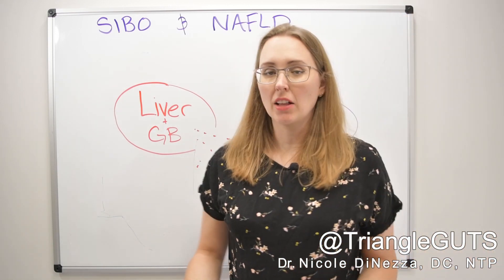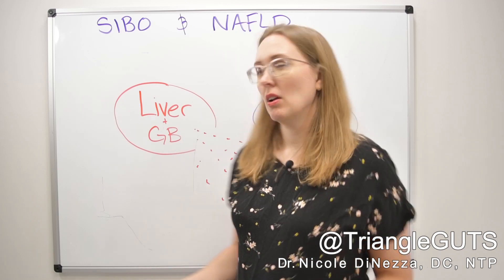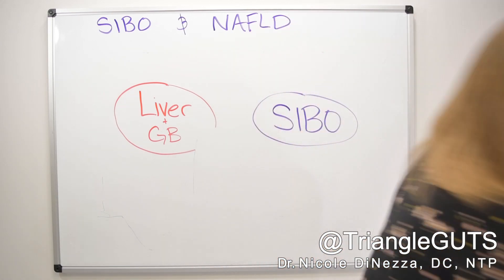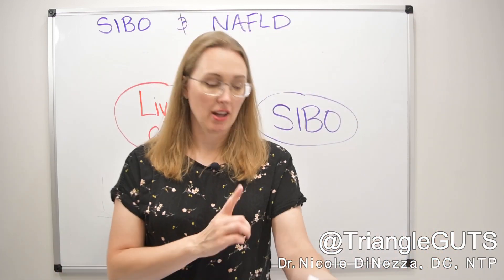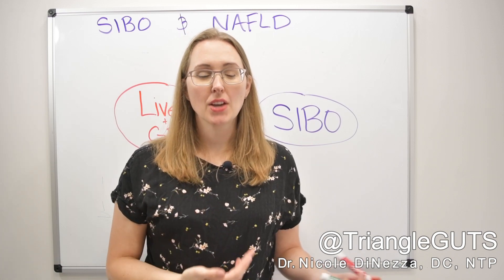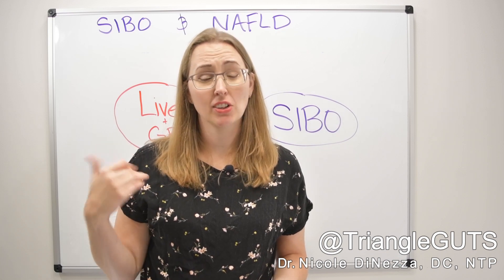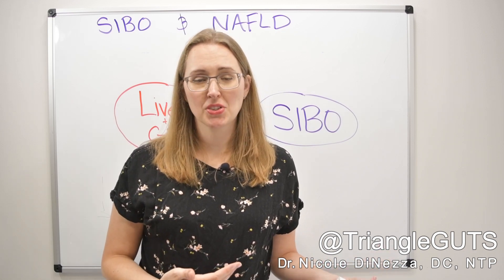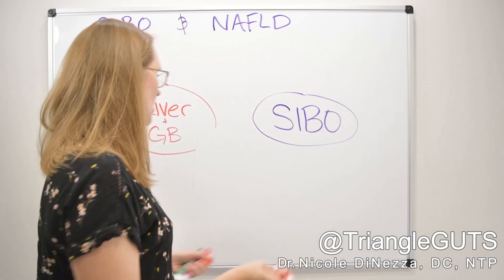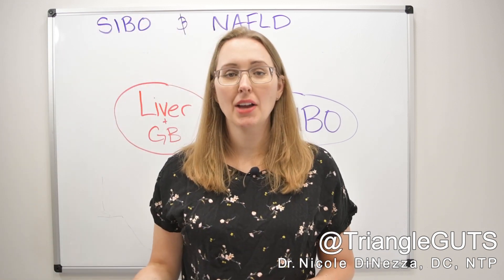At its core, elevated liver enzymes — ALT and AST — just signify liver damage and liver cell death. You could have this happen for numerous reasons. For example, when I was a teenager I had a pretty bad case of Lyme disease, and during six weeks of PICC line antibiotics directly into my veins, my doctor monitored my liver enzymes to make sure we weren't damaging my liver. Sure enough, my liver enzymes did creep up into the 90s. So you can get liver cell damage not only from NAFLD, but from things like antibiotics or other medications.